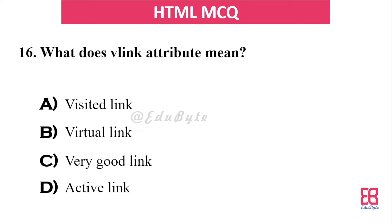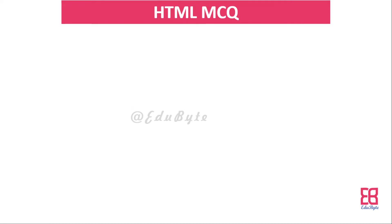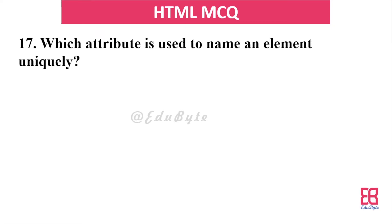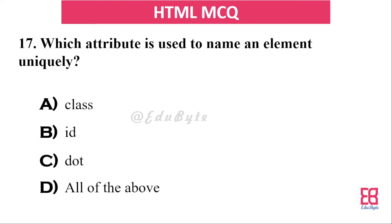Question fourteen: what does the vlink attribute mean? It refers to a visited link. Question fifteen: which attribute is used to name an element uniquely? The options include class, ID, and all of the above. The correct answer is ID — the ID attribute uniquely identifies an element.